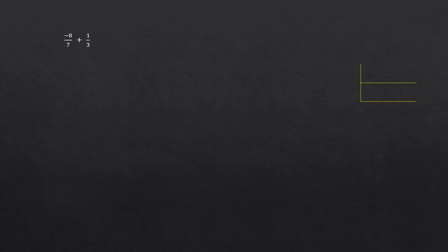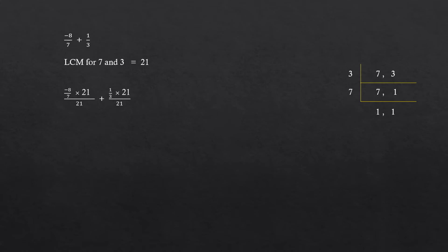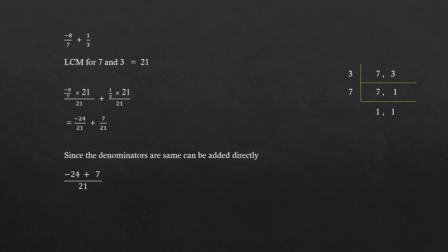Since denominators are different, we have to find the LCM of 7 and 3, which is equal to 21. Now we will multiply and divide both the fractions with 21: minus 8 by 7 into 21 whole divided by 21 plus 1 by 3 into 21 whole divided by 21, which is equal to minus 24 by 21 plus 7 by 21. Since the denominators are same, we can add the numerator keeping the denominator: minus 24 plus 7 whole divided by 21, which is equal to minus 17 by 21.